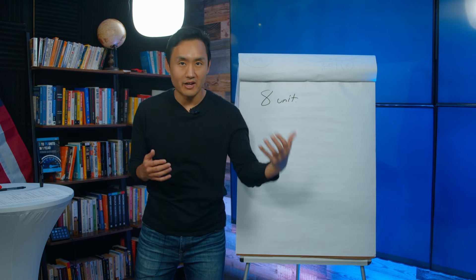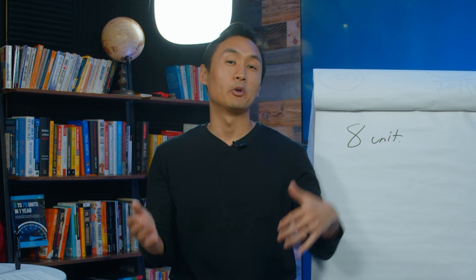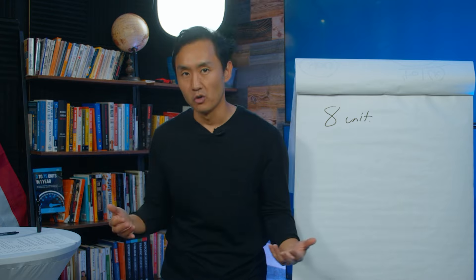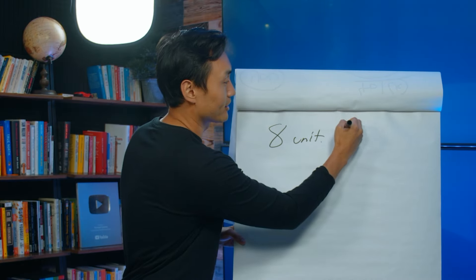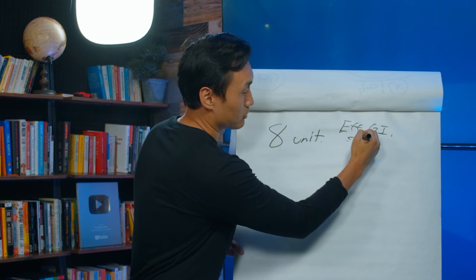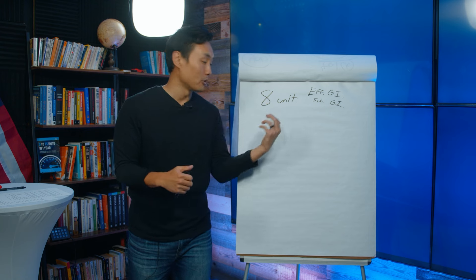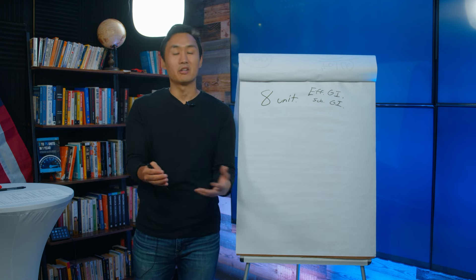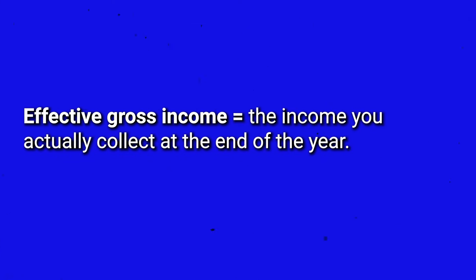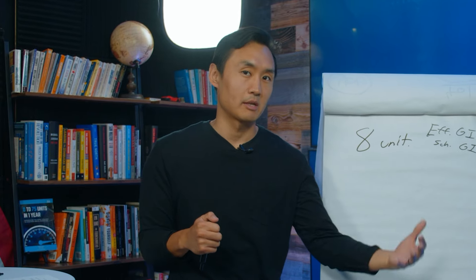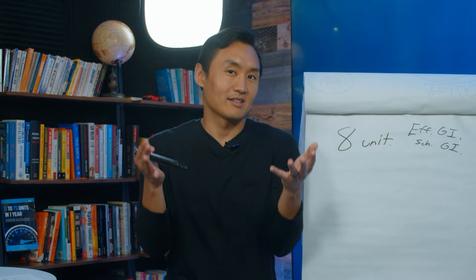We raised about $150,000 to do the rehab and get all the units ready and leased out. Thankfully, the tenants we placed after stabilization all paid on time and in full. That leads us to effective gross income — there are two types: scheduled gross income is the money you're scheduled to collect based on leases, and effective gross income is the money you actually collect by year's end. Because our tenants paid in full, both numbers were exactly the same.